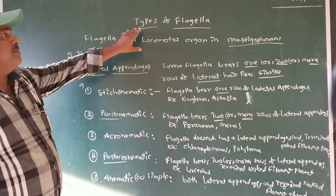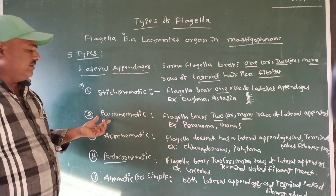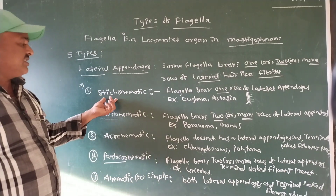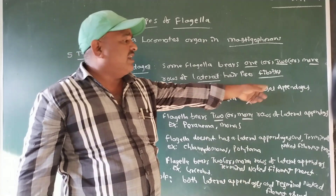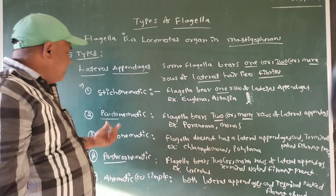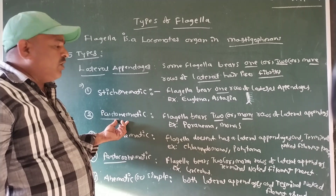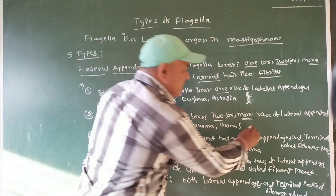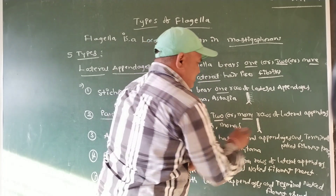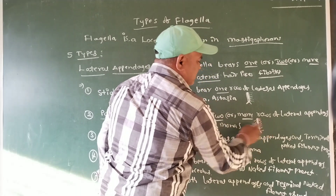Once again: types of flagella based on the arrangement of lateral appendages are five types. Stichonemotic — flagella bears one row of lateral appendages; example, Euglena and Astasia. Pantonemotic — flagella bears two rows of lateral appendages; example, Peranema and Monas. This is the flagella outer sheath with two rows of lateral appendages — called pantonemotic.